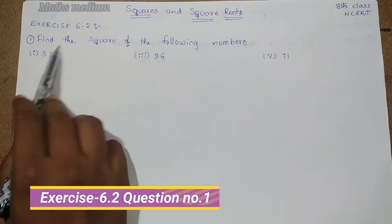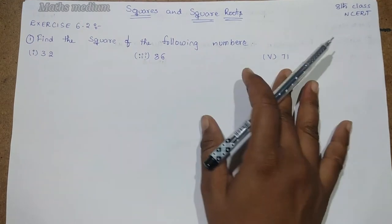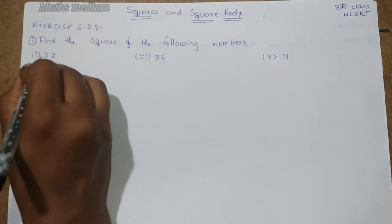Question number 1, find the square of the following numbers: 32, 86 and 71. In earlier sessions, I already explained to you how to find a square of a given number. Check the description box.